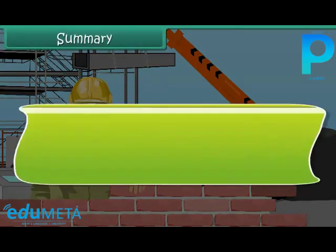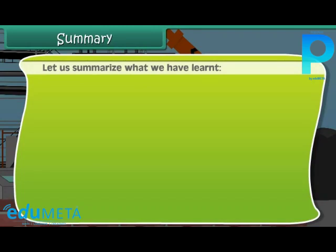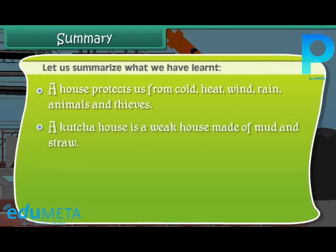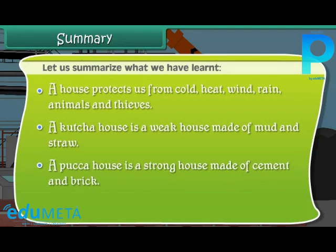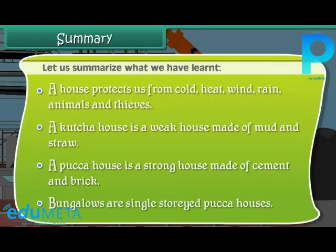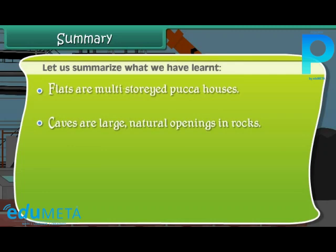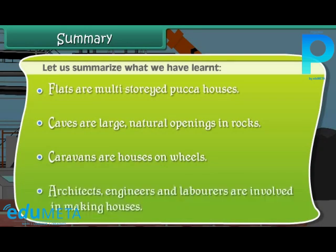Let us summarize what we have learnt. A house protects us from cold, heat, wind, rain, animals, and thieves. A Kaccha house is a weak house made of mud and straw. A Pakka house is a strong house made of cement and brick. Bungalows are single-storied Pakka houses. Flats are multi-storied Pakka houses. Caves are large natural openings in rocks. Caravans are houses on wheels. Architects, engineers, and laborers are involved in making houses.